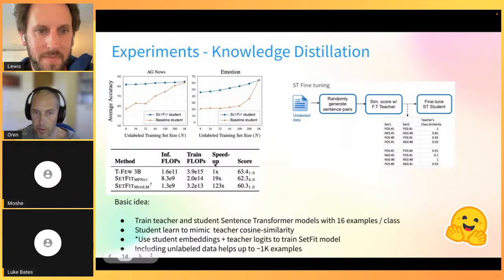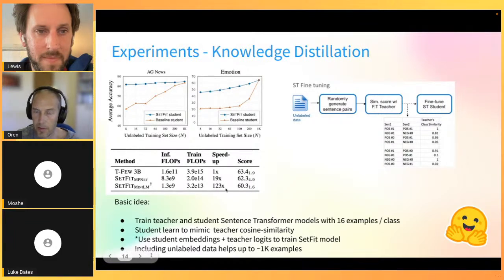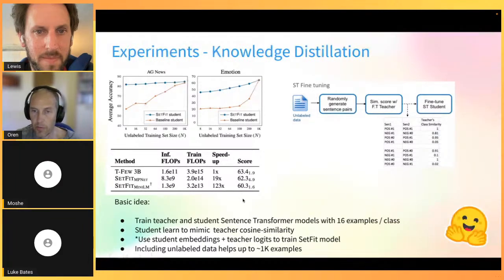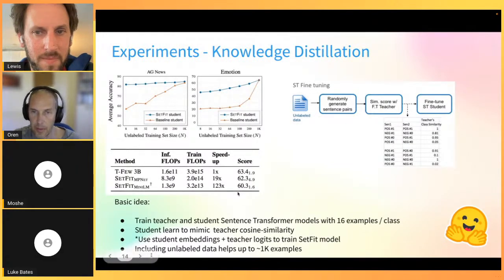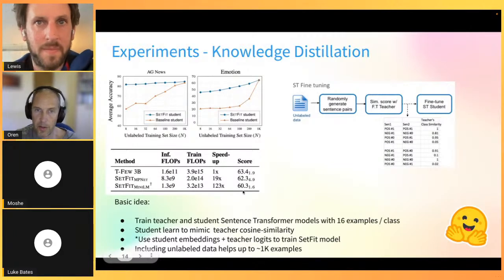Comparing SetFit with MPNet (used in most experiments) to the SetFit student model: the MiniLM-based SetFit student is six times faster, and in the distillation setup using all available unlabeled data, the student falls short of the MPNet teacher by only two points on average accuracy across all datasets. This shows knowledge distillation can produce a very compact and fast model with minimal performance loss.